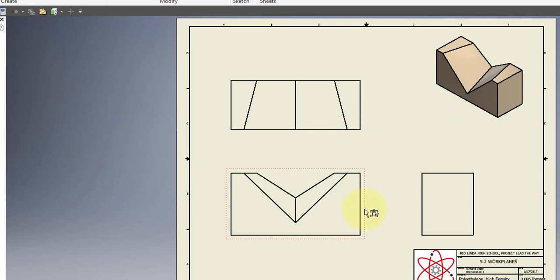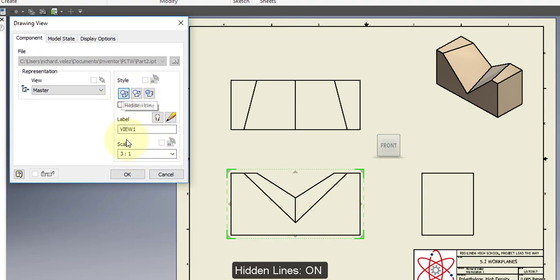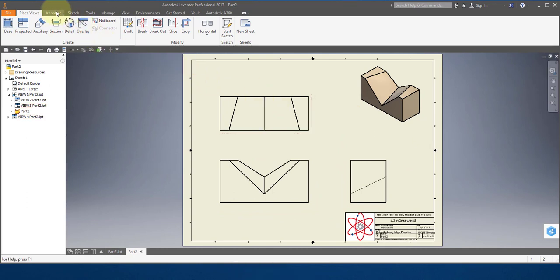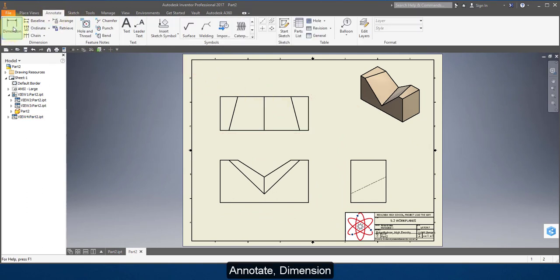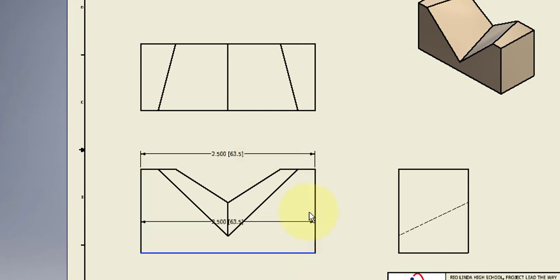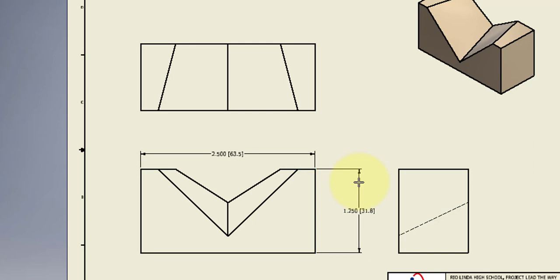I'm going to select the front view and turn on hidden line. Select Annotate and choose Dimension. Dimension all the features of the part.